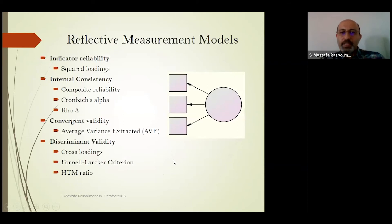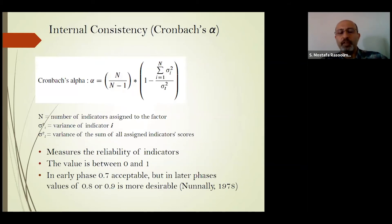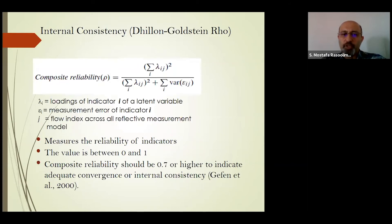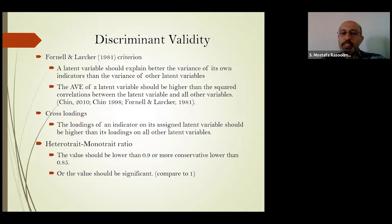In the next slides, I present the meaning of each criterion in detail — indicator reliability, internal consistency, and different criteria for assessing internal consistency like Cronbach's alpha and composite reliability. Average variance extracted (AVE) is a criterion to assess convergent validity. For discriminant validity, I have presented three criteria to assess it.